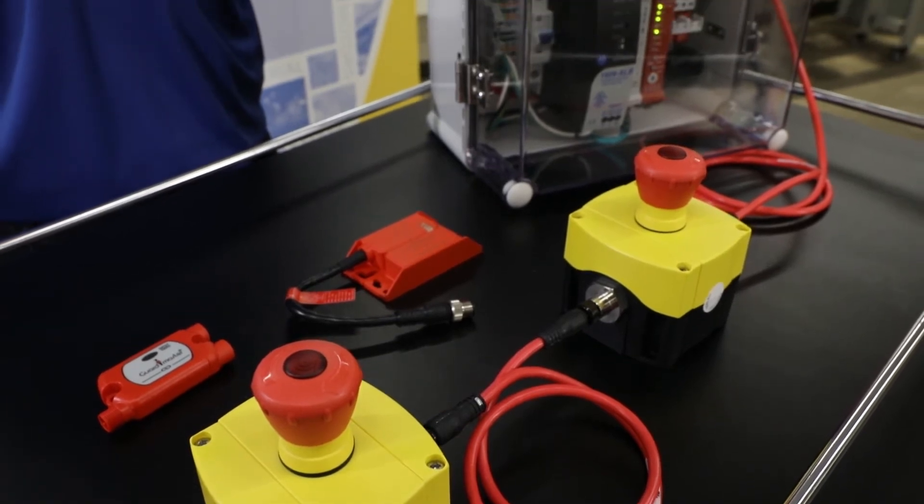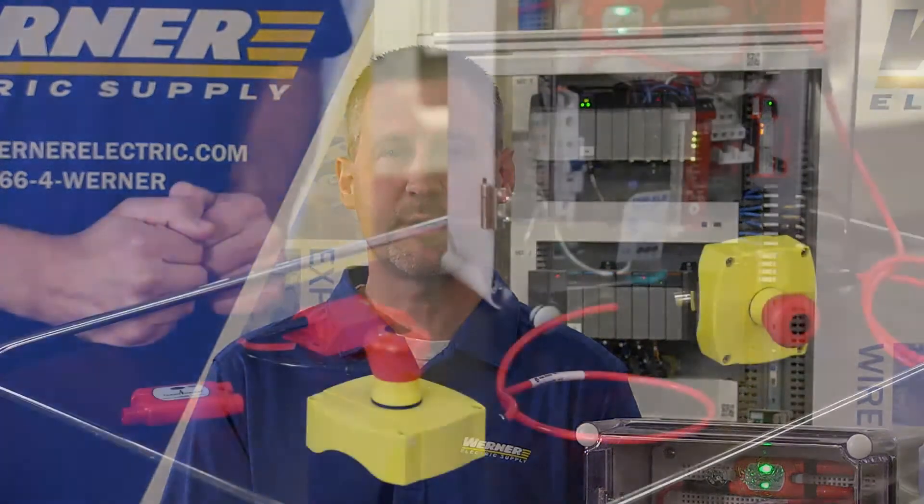800F e-stops come pre-assembled and factory sealed saving you time on wiring installation. They also include self-monitoring contact blocks for increased safety of your circuit.